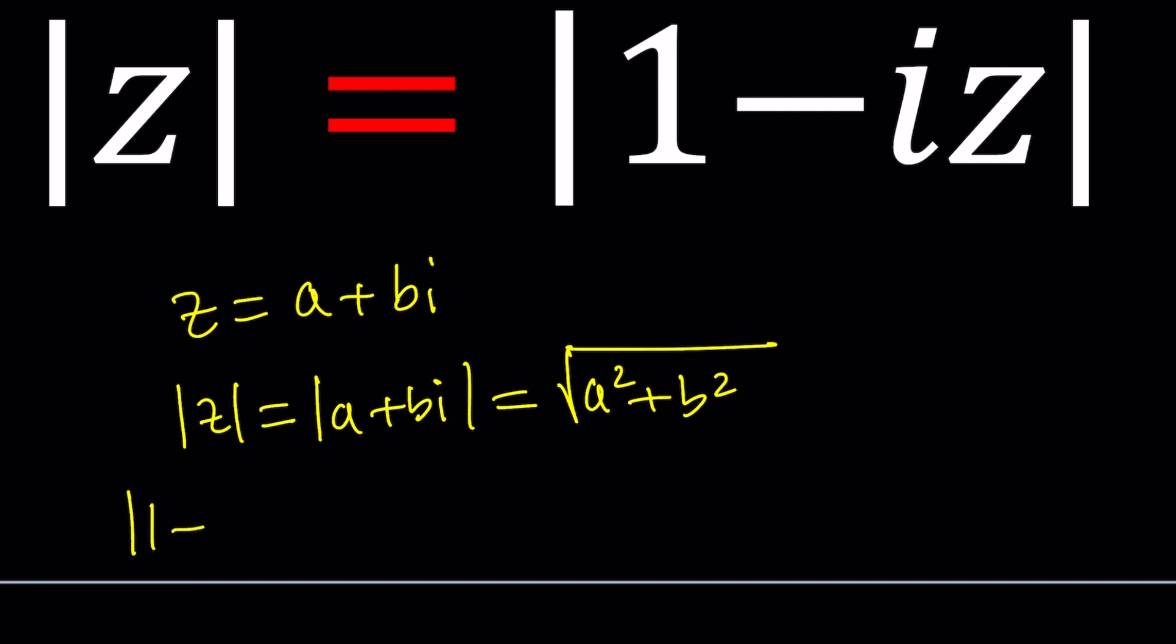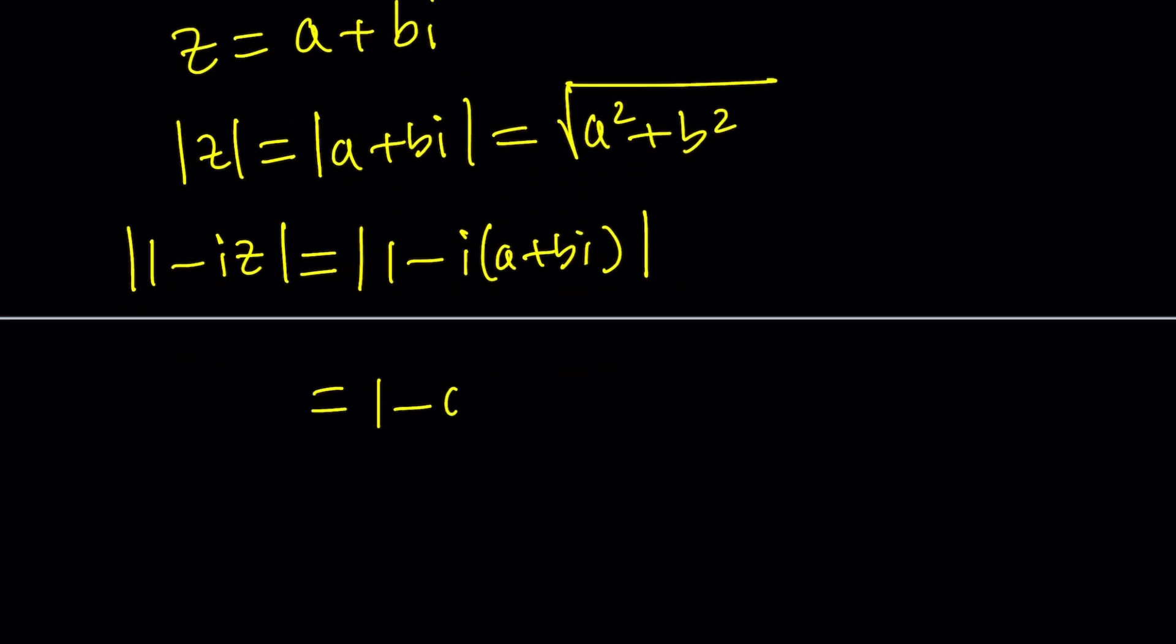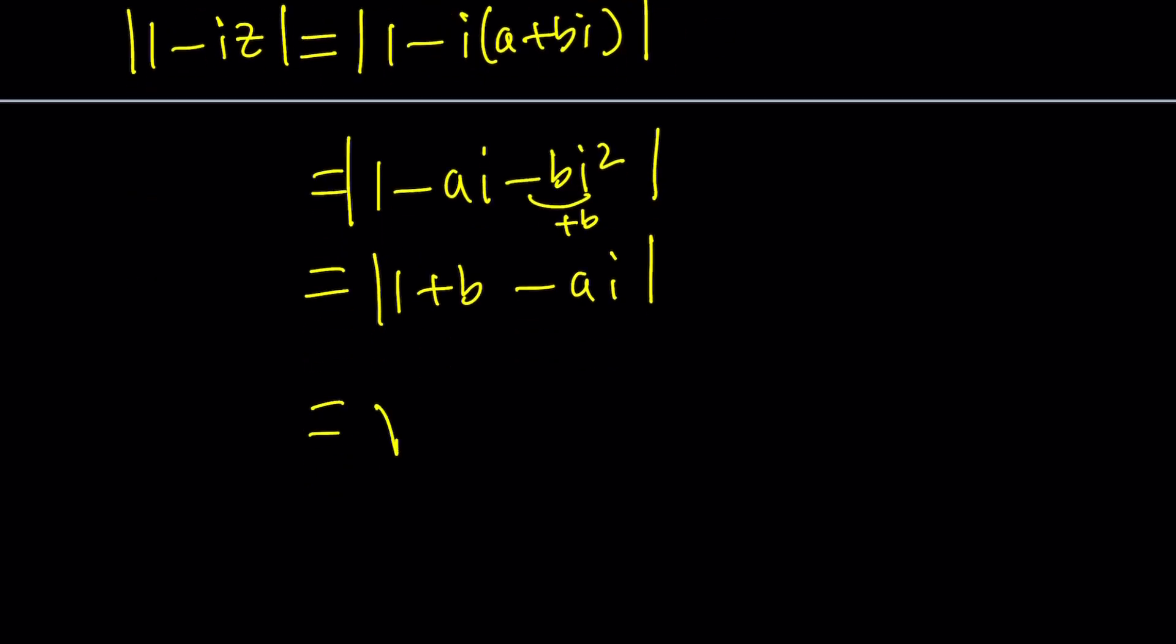And the absolute value of 1 minus IZ is just going to be 1 minus I times A plus BI. Let's go ahead and simplify it. That is going to be 1 minus AI. I times BI is BI squared with a minus sign. It's going to be minus BI squared, but I squared is negative 1. So that's just going to be plus B. So now we have 1 plus B minus AI and the absolute value of that. So to find the absolute value of this expression, of course, we have to use the square root of (1 plus B) squared plus A squared. And that will be the answer.